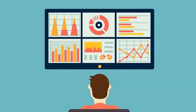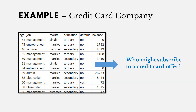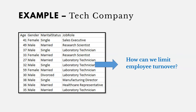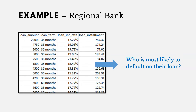Here are a few specific examples of business analytics. If you work at a credit card company, you could analyze customer data to determine who might subscribe to a credit card offer, allowing you to target those specific customers. At a tech company, you could review employee data to understand why people leave and minimize turnover. Or at a regional bank, you could review loan data to predict which customers are most likely to default. The options are endless.